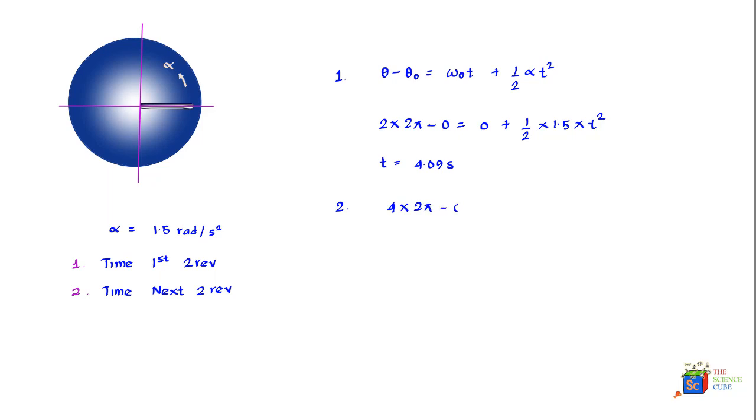This equals zero plus ½ times α, which is 1.5 rad/s², times t². Solving for t, we get t = 5.78 seconds.